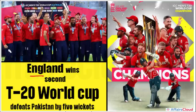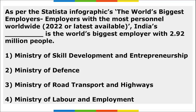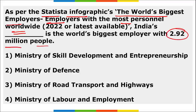England won the T20 World Cup by defeating Pakistan in the final. As per the Statista infographics on the world's biggest employers, the organization with the most personnel worldwide — 2.92 million people — is the Ministry of Defense of India.